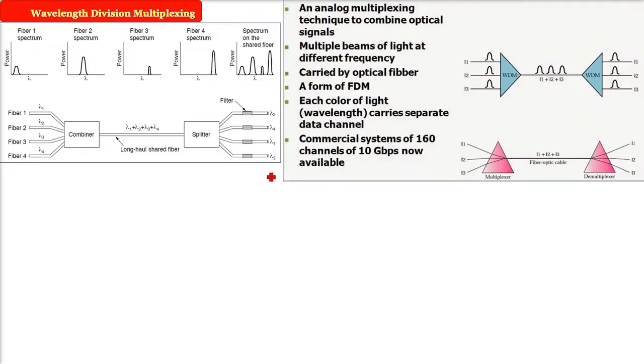Wavelength division multiplexing. Wavelength is a property of a signal, wave, any wave, any sine, cosine type of wave. It will have a wavelength. That is, wavelength is a distance between the two crests or two troughs.